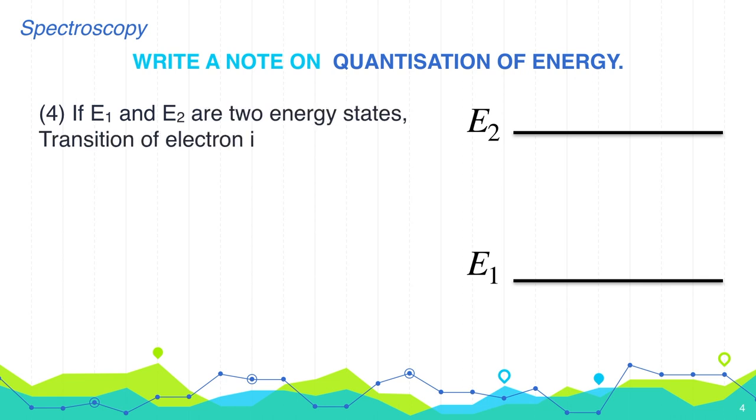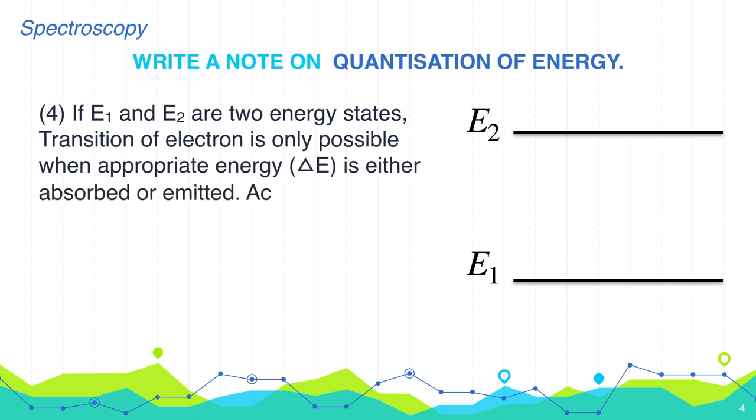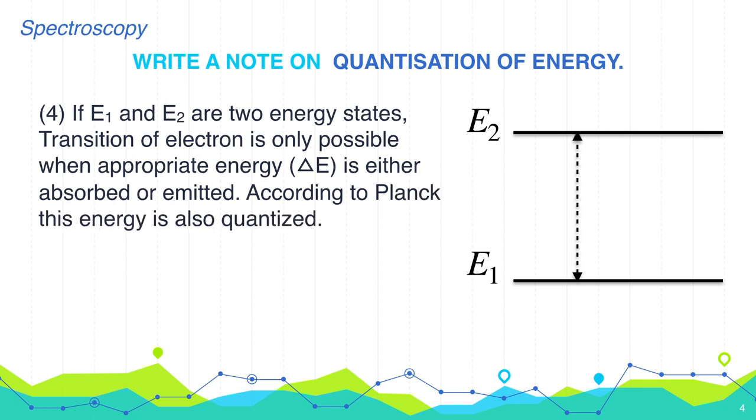transition of electron is only possible when appropriate energy delta E is either absorbed or emitted. According to Planck, this energy is also quantized. So E2 minus E1, which is delta E, is also h nu.